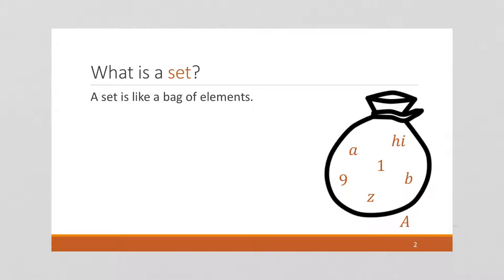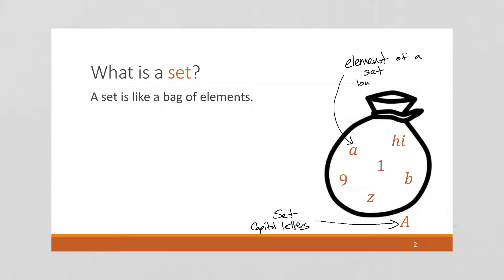By convention, sets are designated with capital letters, so this is a set right here. Elements of a set are usually designated as lowercase letters. Though it is possible to have a set within a set — if a set is like a bag, imagine a bag that has a smaller bag inside, like a little coin purse. So it's possible to have set B inside of set A. We'll see more of that in a bit.